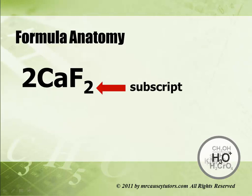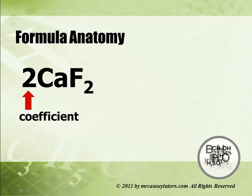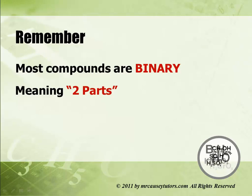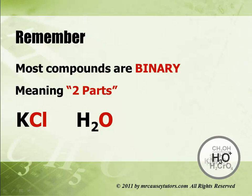The little numbers below the elements are subscripts. There must be two fluorines, so we put a subscript two. There's only one calcium, and just like in algebra, we don't write ones. The coefficient tells me how many formula units there are — remember calcium fluoride is ionic, so we say formula units — or how many moles there are. Most compounds are binary, meaning they have two parts, like KCl or H2O.